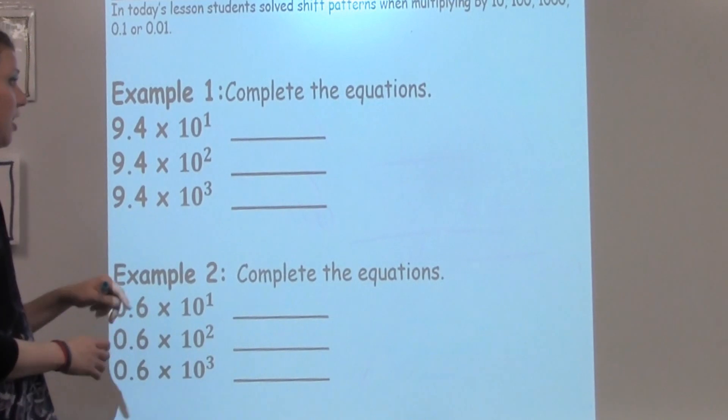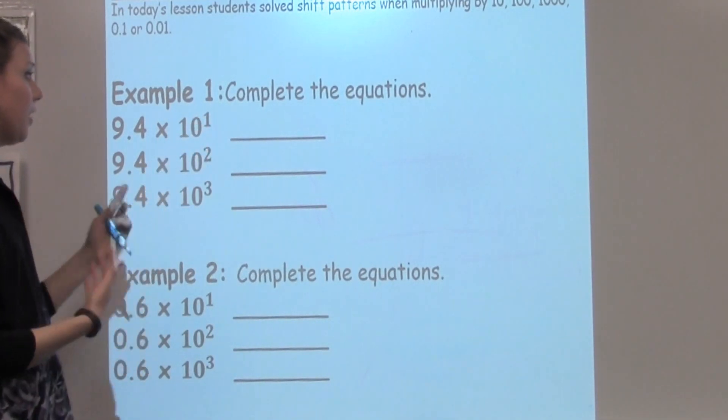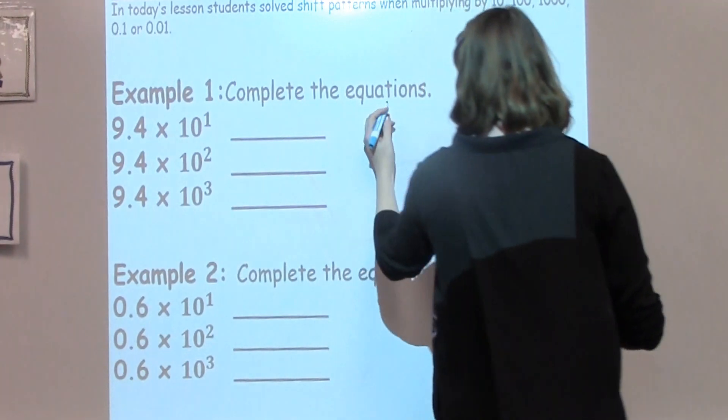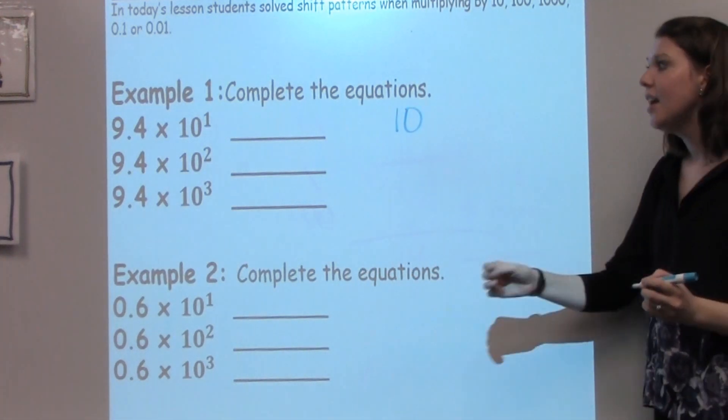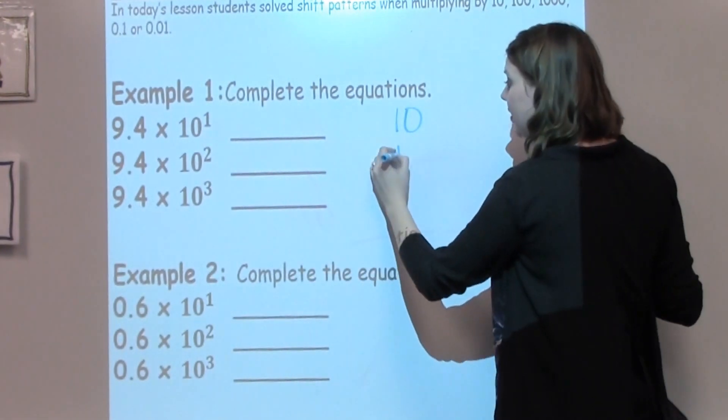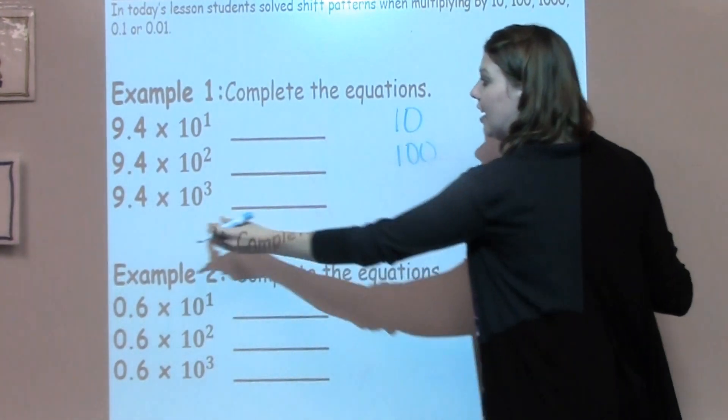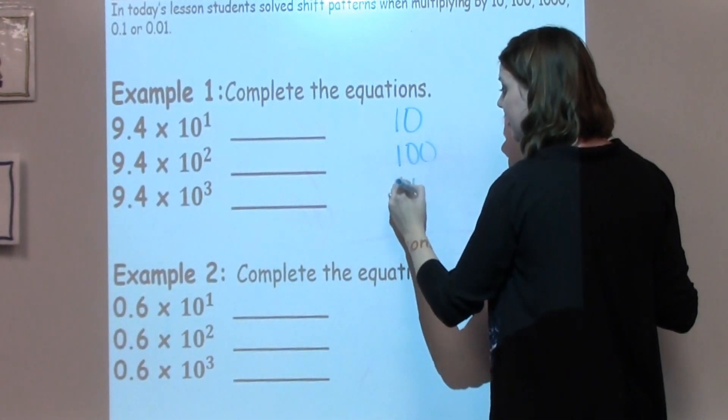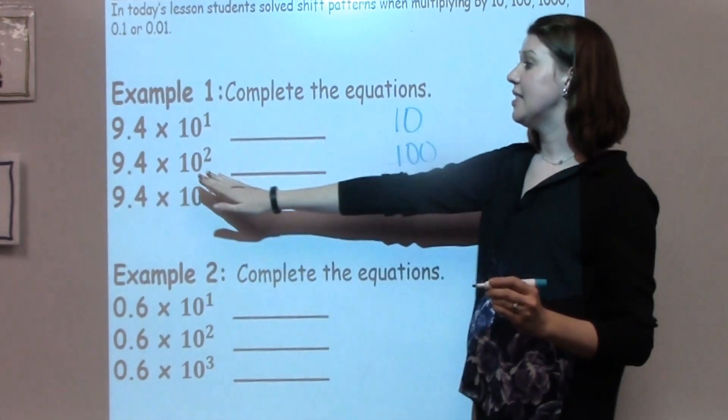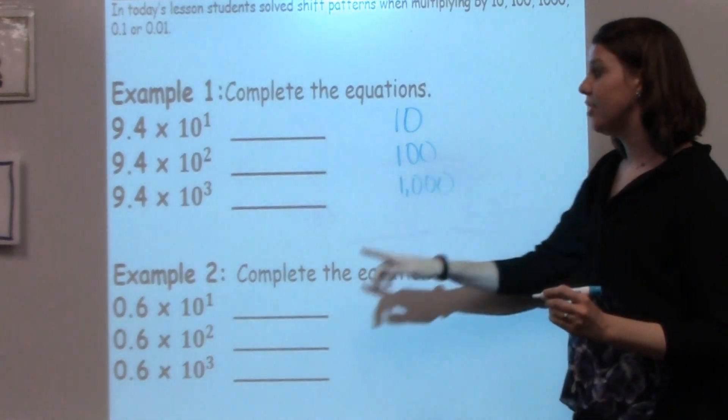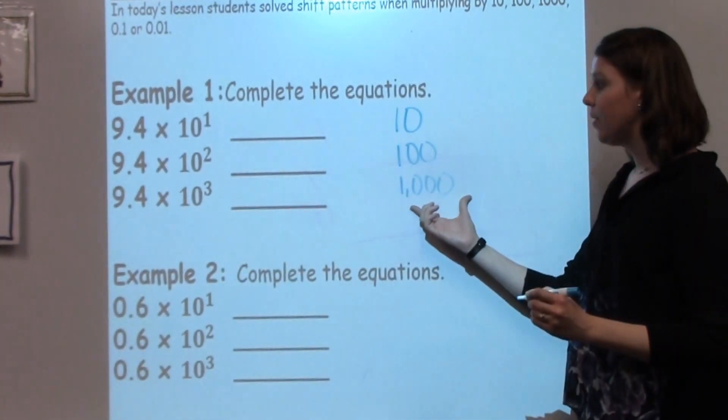The very first thing we want to talk about is what does 10 to the first power actually mean. It just means 10. If I have 10 to the second power, it means 100. And then 10 to the third power means 1,000. So the very first thing that students need to know is 10 to the first power is just 10, to the second power is 100, and 10 to the third power is 1,000.